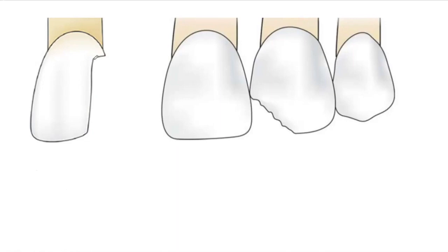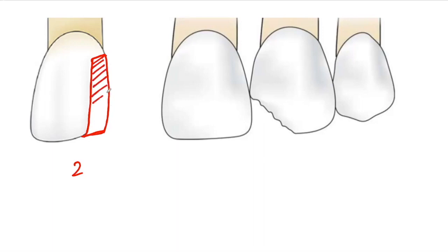If we look at the bonded surfaces of the rectangular-shaped cavity, we'll have one axial wall and one cervical floor — so there are two bonded surfaces. For the unbonded surfaces: one is the part of composite forming the incisal edge, another is the part forming the proximal wall, another is the part forming the labial surface, and the fourth is the composite forming the palatal wall. So we have four unbonded surfaces, giving a C factor of 0.5 for rectangular-shaped class 4 cavity preparation.